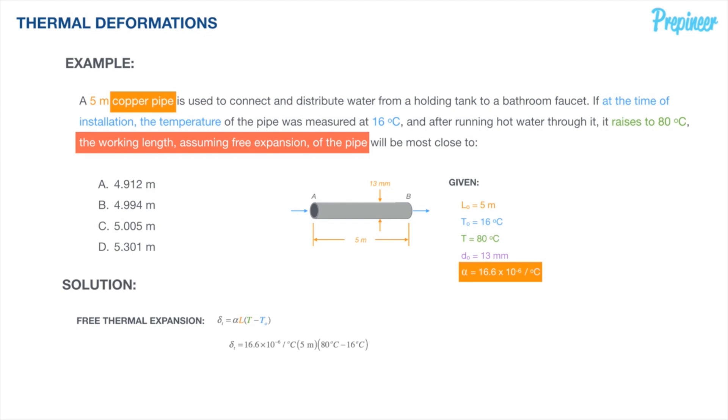All we need to do is simply place those into our formula, pump them into our calculator, and determine that the change, the thermal expansion, the thermal deformation of this copper pipe, is going to be 0.0053. So that's the thermal expansion, the change in length. But we're not done here. That's an important piece of data we need, but we actually are asked to determine what the working length is.